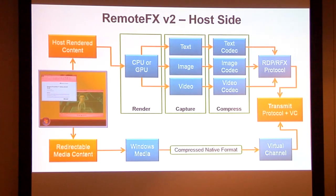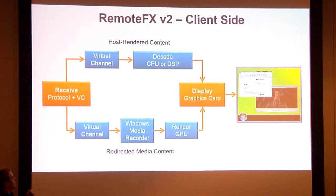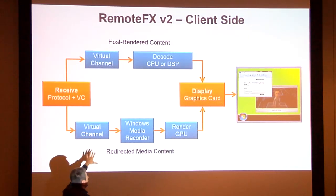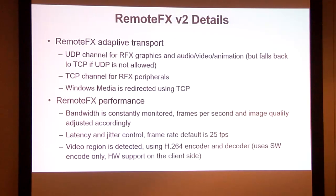The media stream goes through a separate virtual channel to the client side. On the client side, you receive everything: the three media streams that come through RDP — text, still image, and video — where you use the CPU or DSP to decode and display everything, or you have redirected media content treated separately. The redirected media is classically the same as MMR in RDP 7, which is restricted to Windows media types specifically — not generic media redirection.